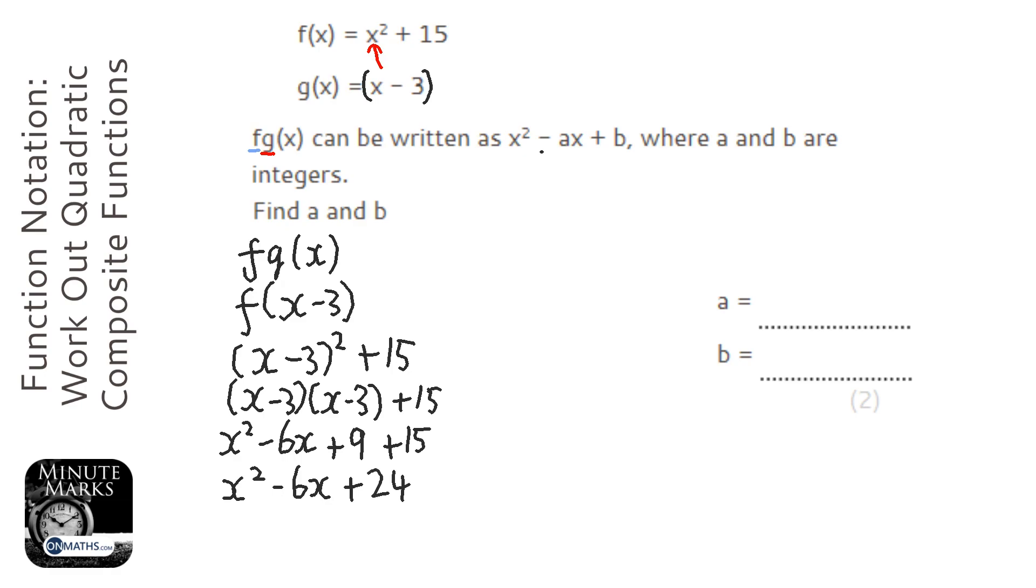So the a, which is the number here, is going to be 6, and the b, which is the number at the end, is going to be 24.